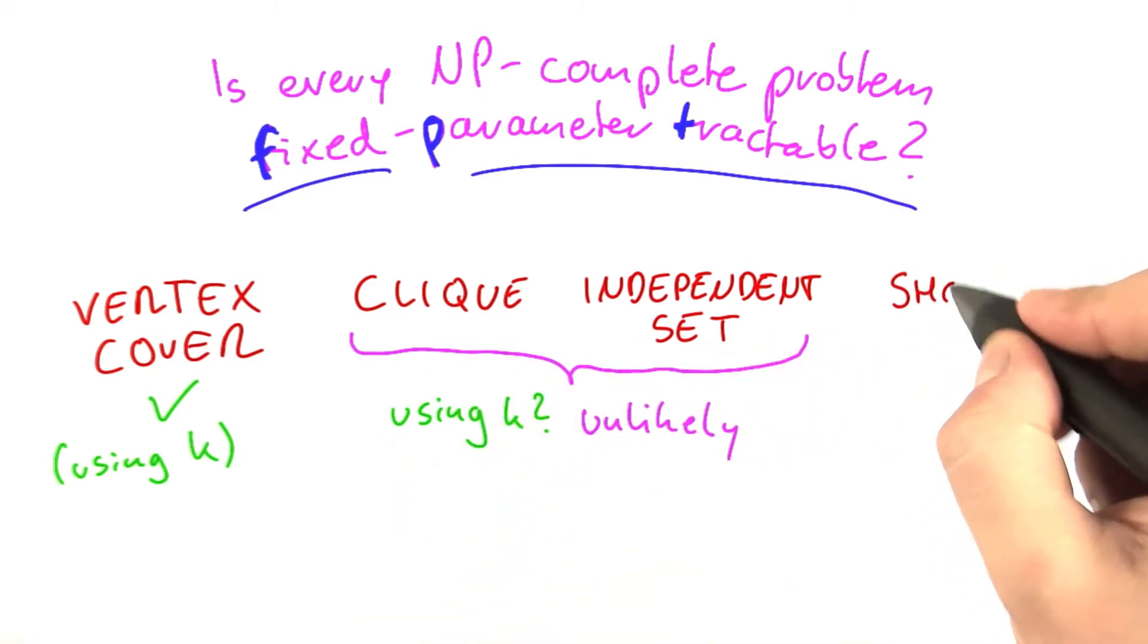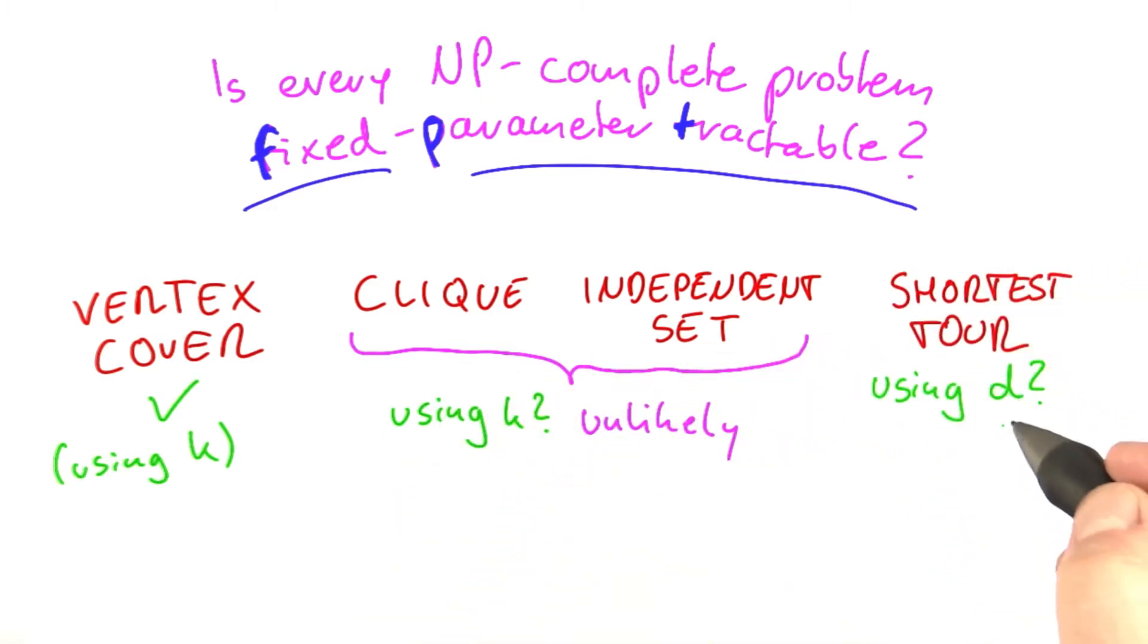Now, what about shortest tour? Well, one possible parameter here would be using d, the size of a shortest tour. And here again, it seems somewhat unlikely that the problem is fixed parameter tractable.